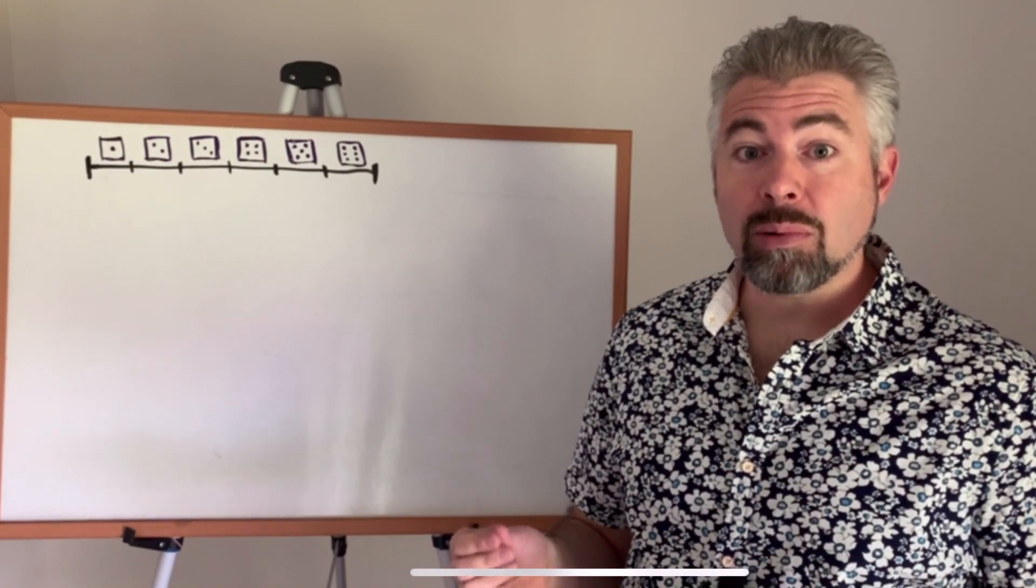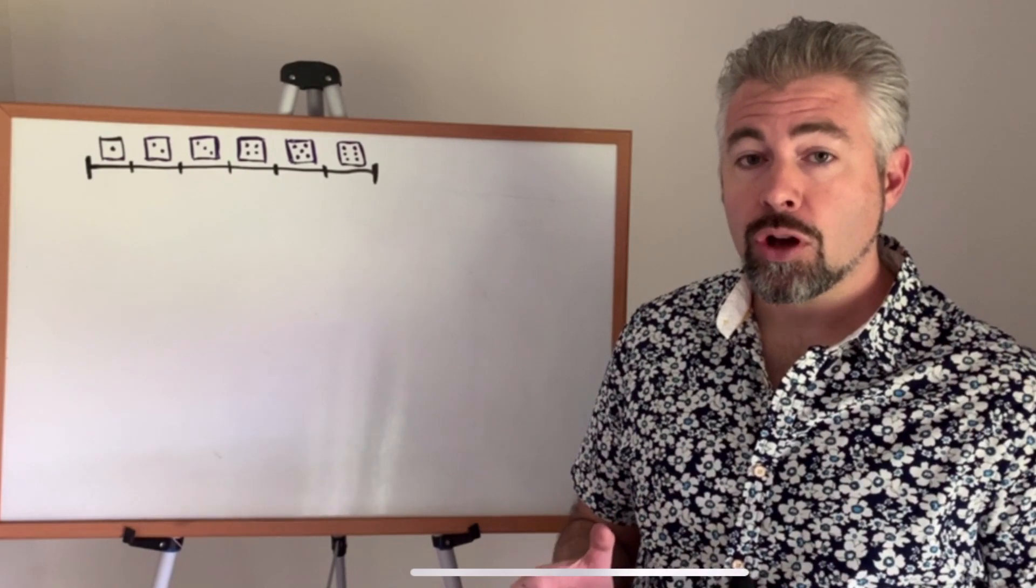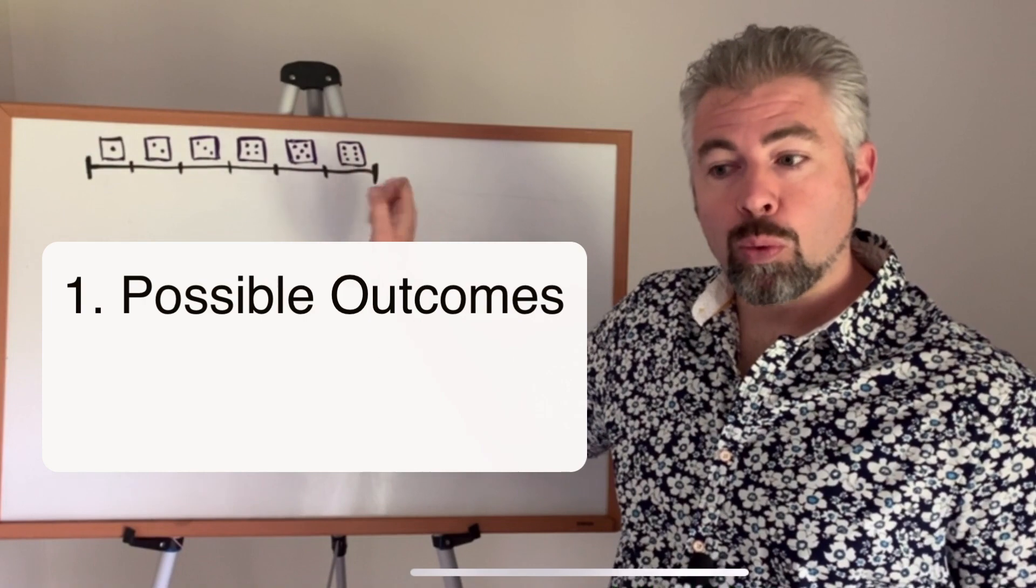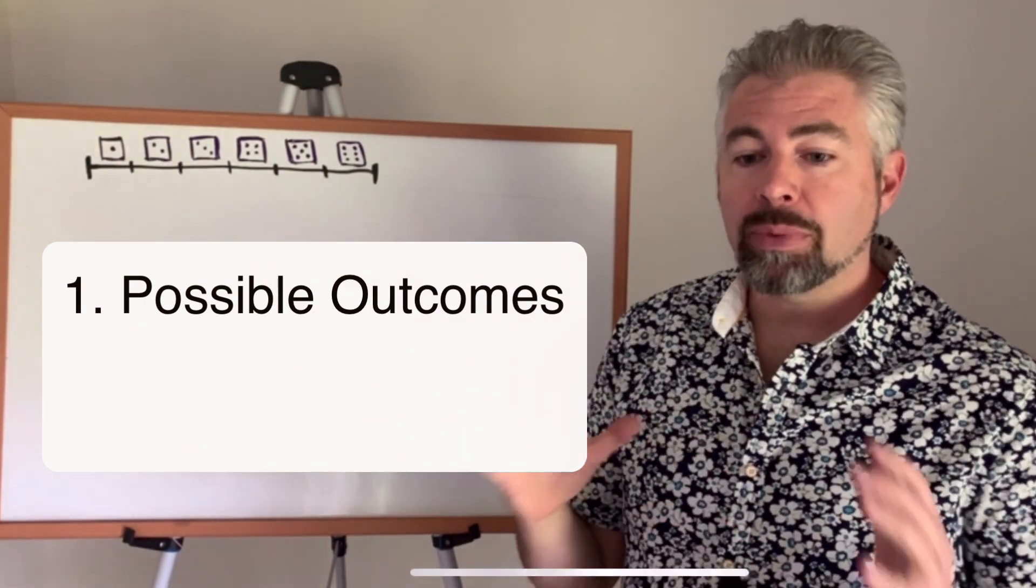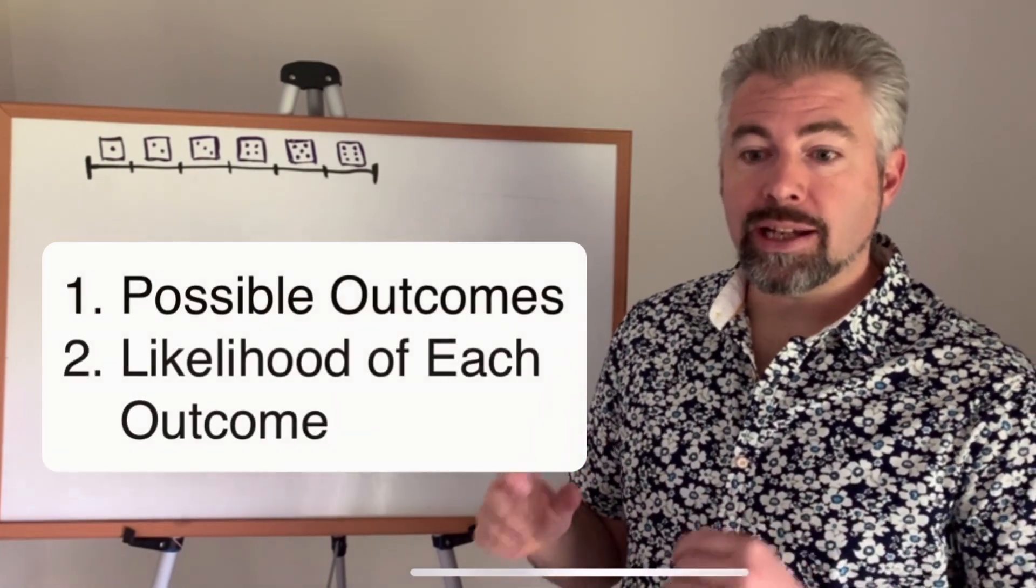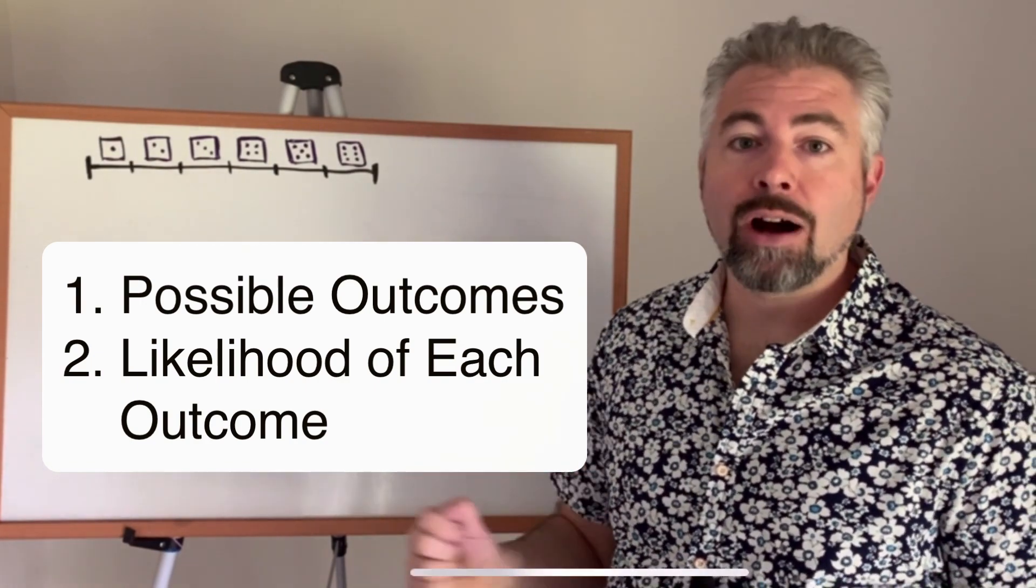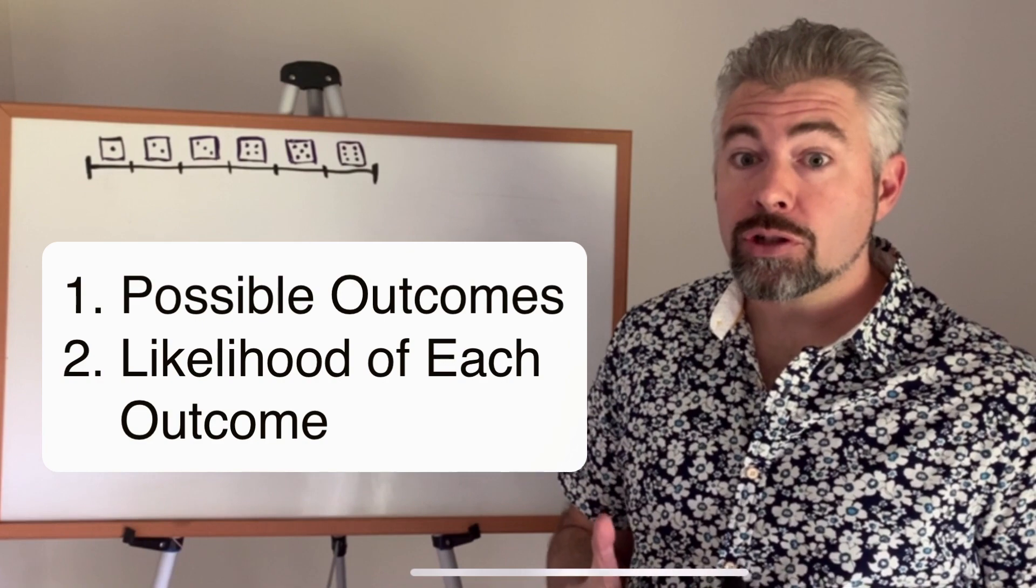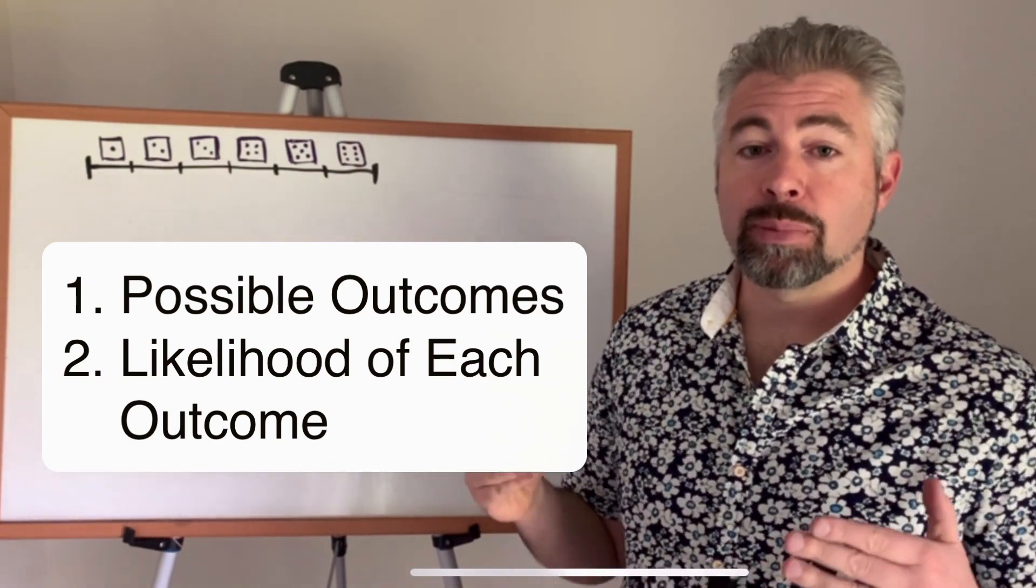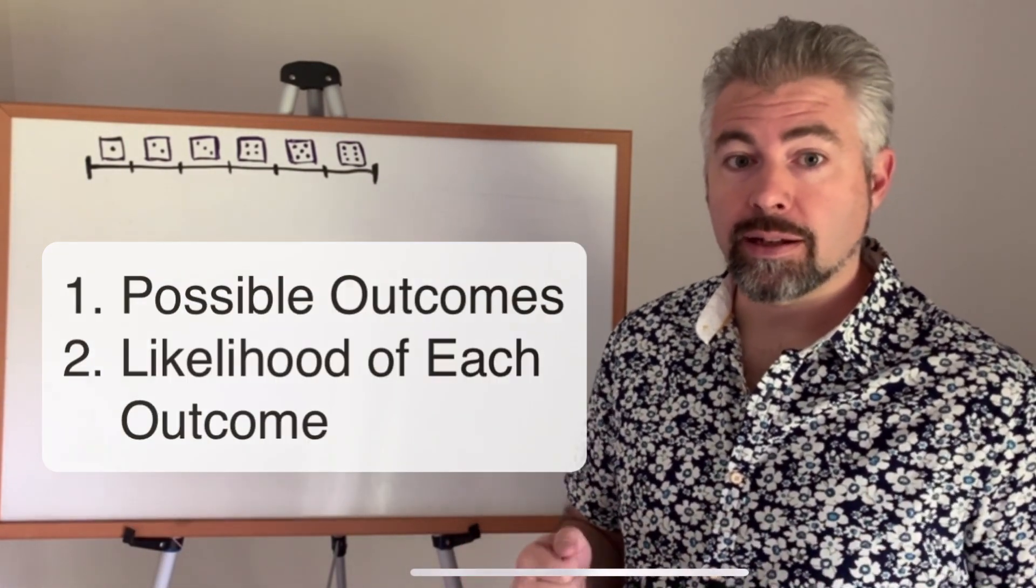So to find the probability when rolling two dice, I have to answer two questions. First, what are the total possible outcomes? If I combined all the ways that I could roll one die with all the ways I could roll the other die, how many possible outcomes are there? Then we need to look at each individual outcome within that. How likely is it to roll a three? How likely is it to roll an eight? Now at first, you might think that it's just as likely. If I have two dice, that it might be just as likely to roll a 12 as it is to roll a five. But that's not the case. Let's take a closer look.